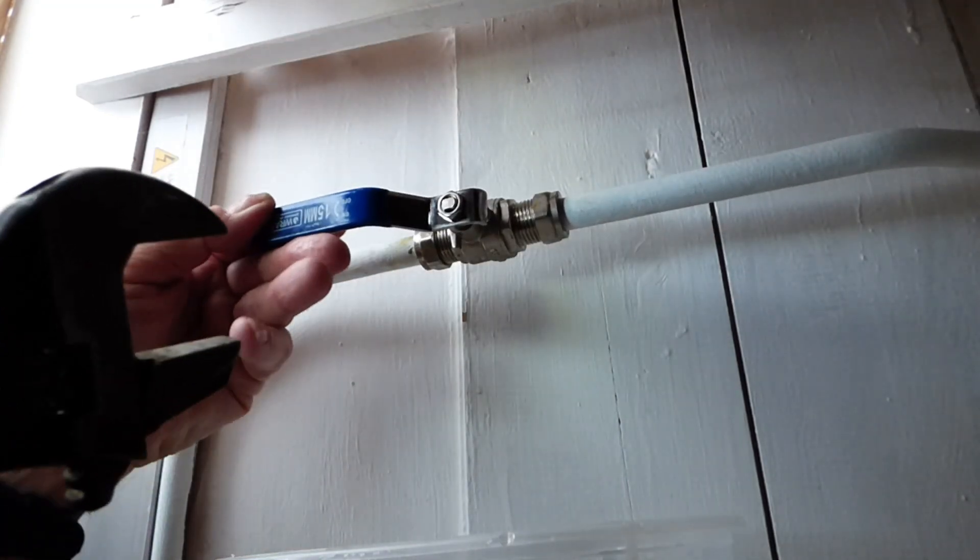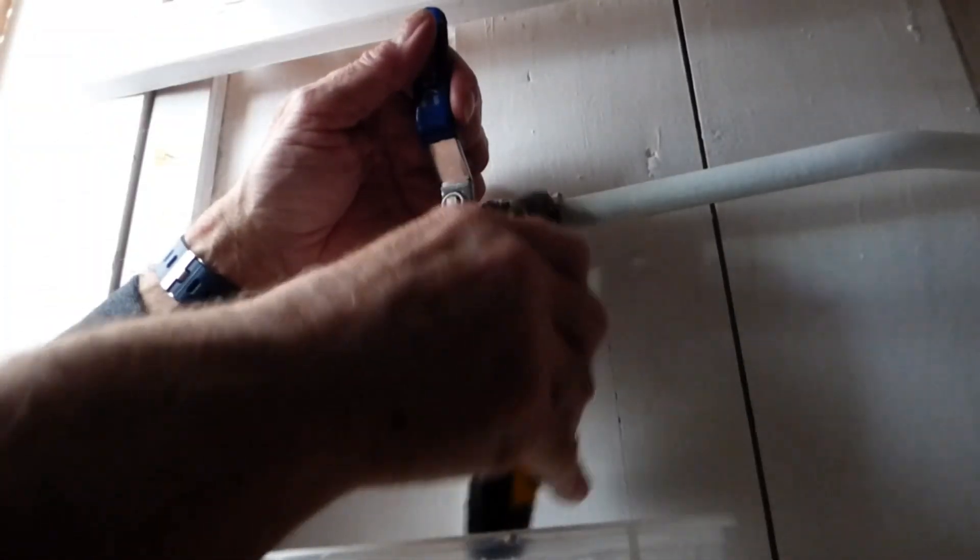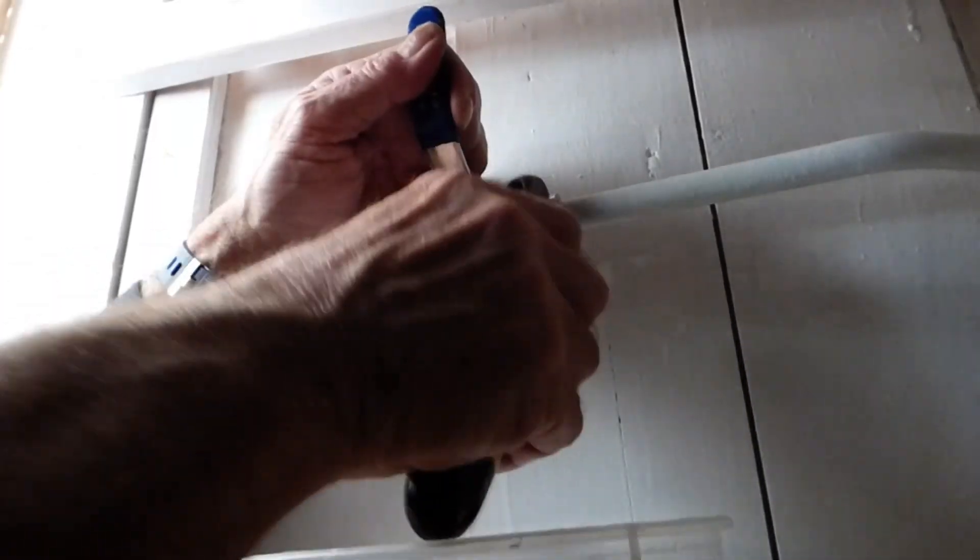So I'm going to position it there and drop it down to there for on, and that's the off position. Now we've got a handle, so we can hold against with the handle, which makes life a lot easier because we haven't got to put a spanner on the other side.